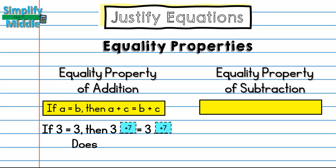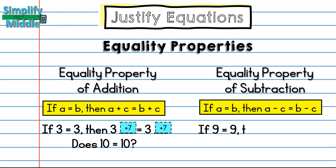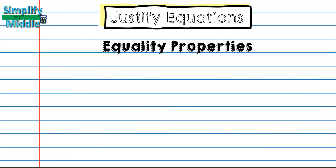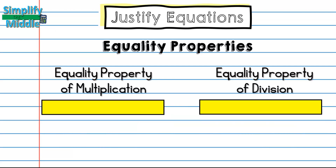For the equality property of subtraction: if a = b, then a − c = b − c. As long as we take the same thing away from both sides — like a balance scale — the equation stays equal on both sides. So if 9 = 9, then 9 − 2 = 9 − 2. Does 7 = 7? Yes, it does.